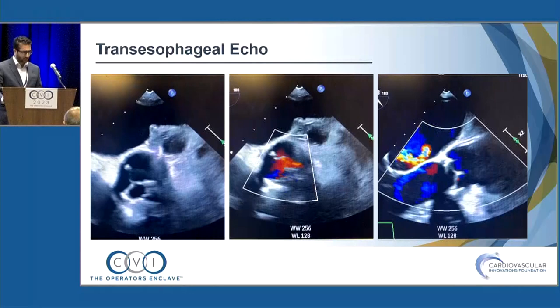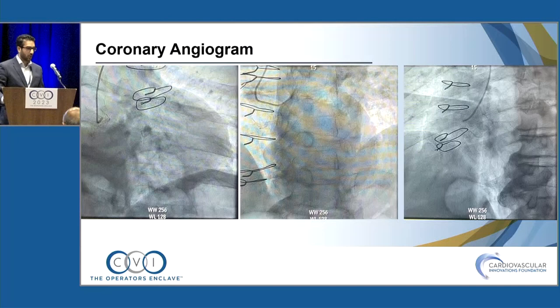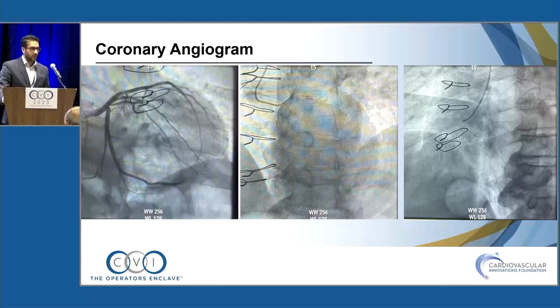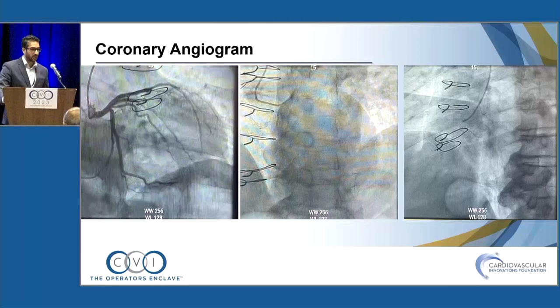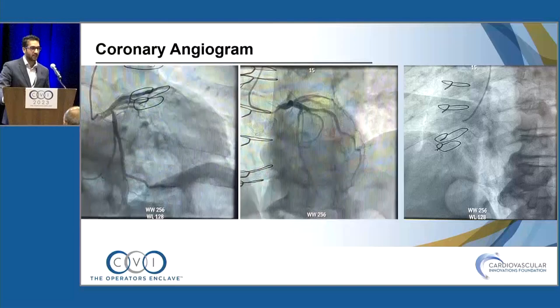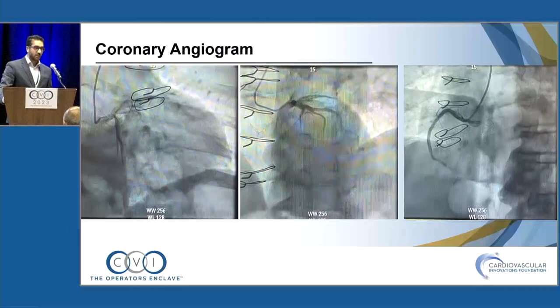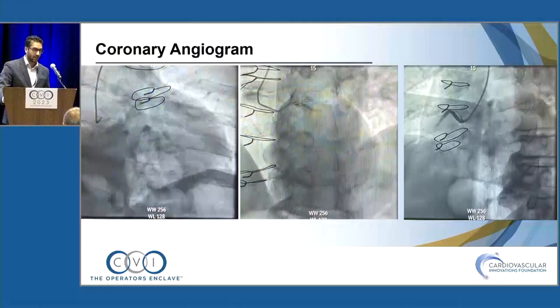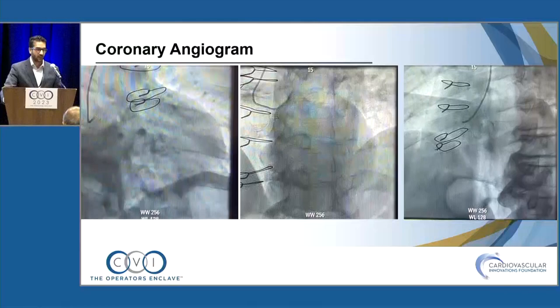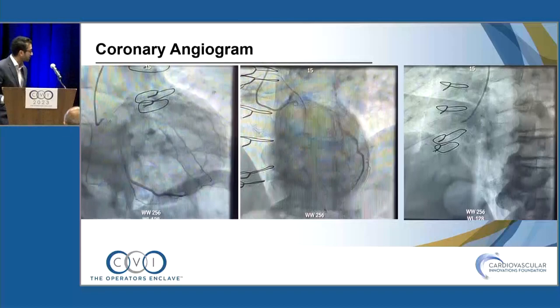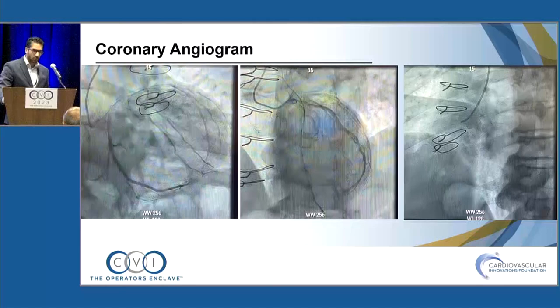He was not doing well — functional class II-III and progressively getting worse. His coronary angiogram showed the left main possibly close to the struts of the bioprosthetic valve in some views. The CT TAVR showed sinuses around 30-31 mm. His Trifecta 23 qualifies him for a 26 self-expanding or Sapien valve. Coronary heights were 10 mm on the left and 14 mm on the right. However, the valve-to-coronary distance on the right was 2.4 mm — less than 4 mm, which is the level of concern.